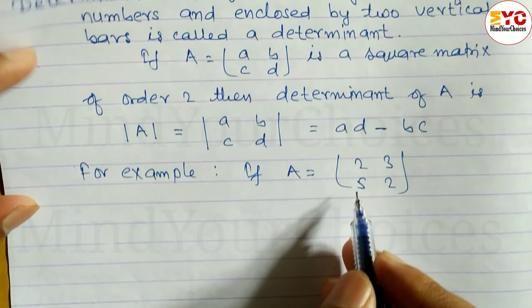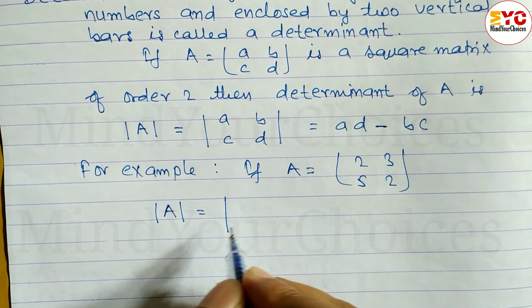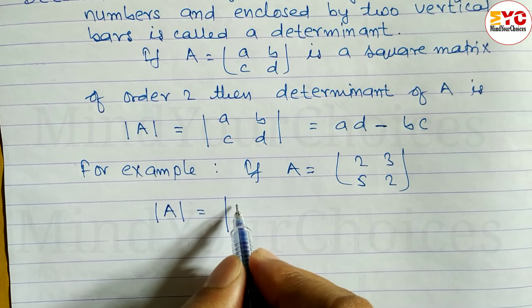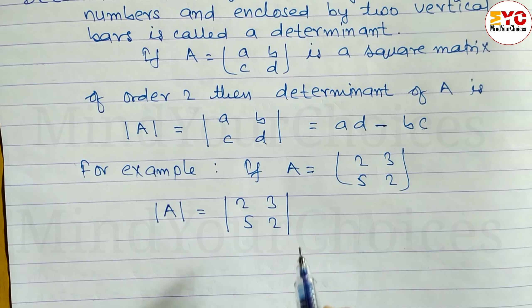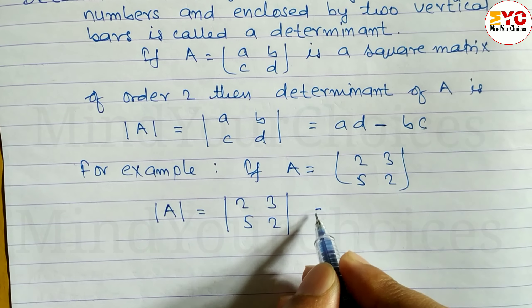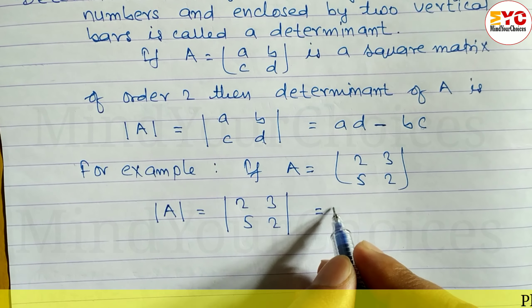For example, if A = (2 3; 5 2). Look at how to find the determinant of this matrix A. Write the determinant sign with the elements of matrix A: 2, 3, 5, 2 enclosed in vertical bars.